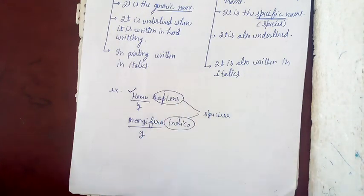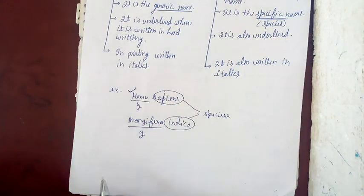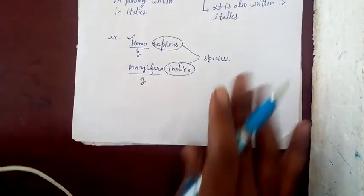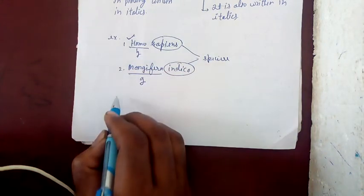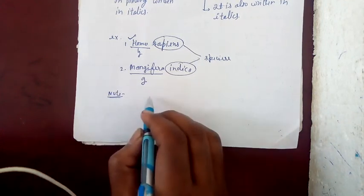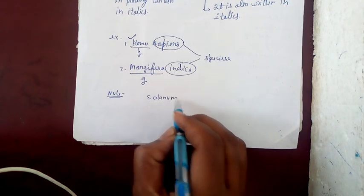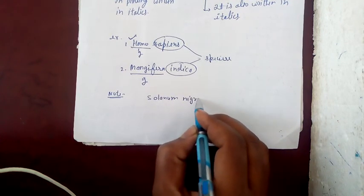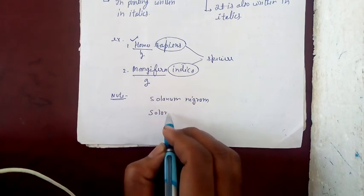As you can see, genus is one, species is one. But there's another case where genus is the same but species can vary. For example, Solanum nigram.